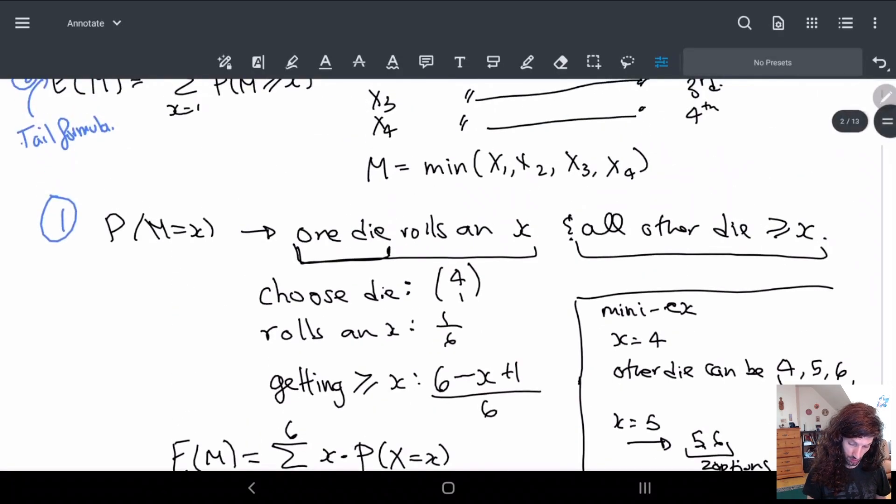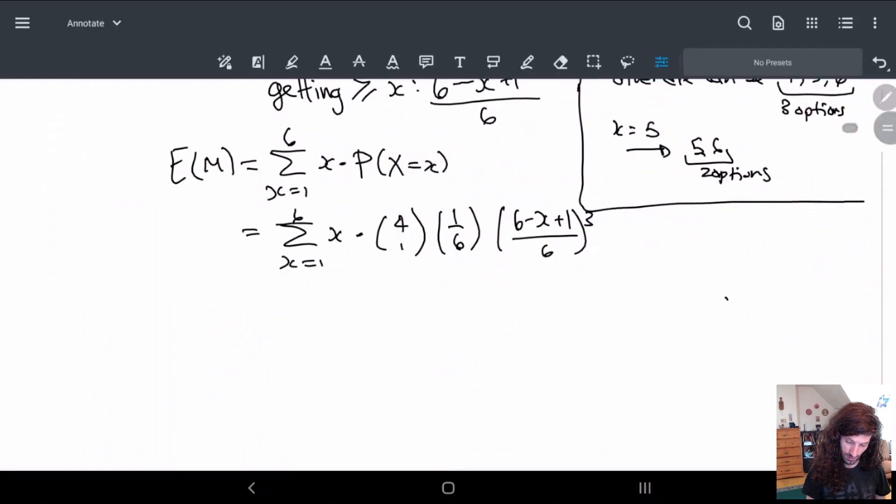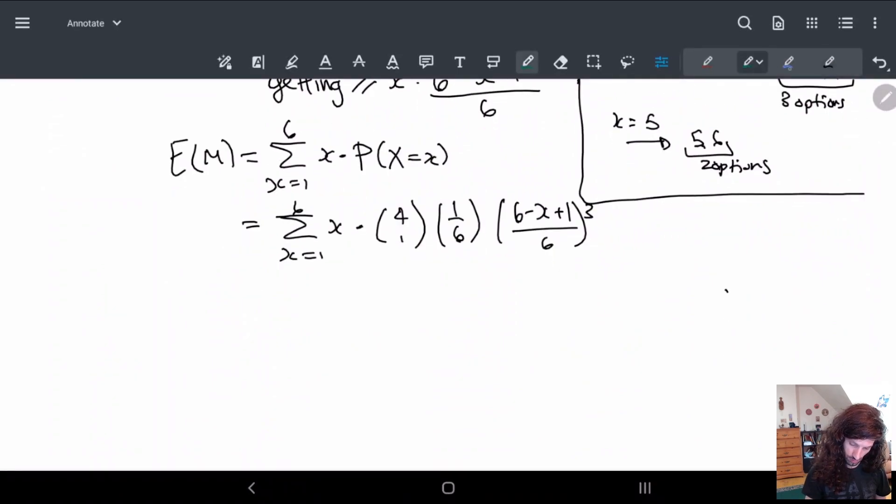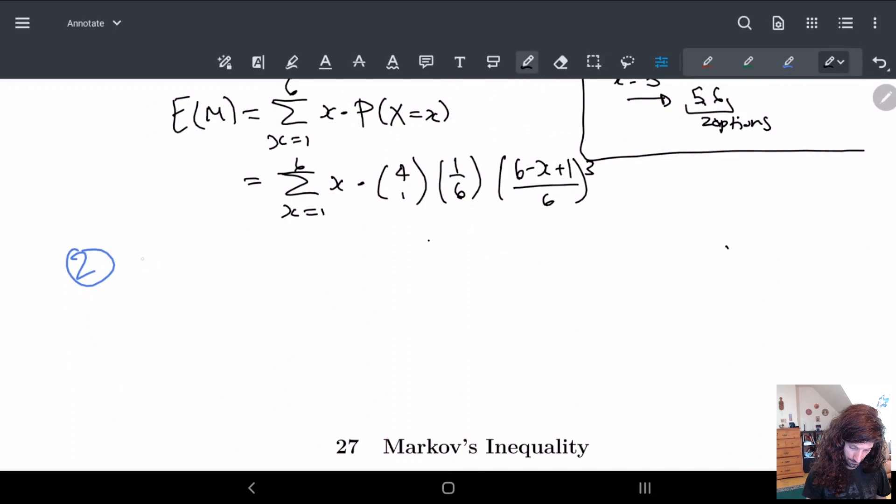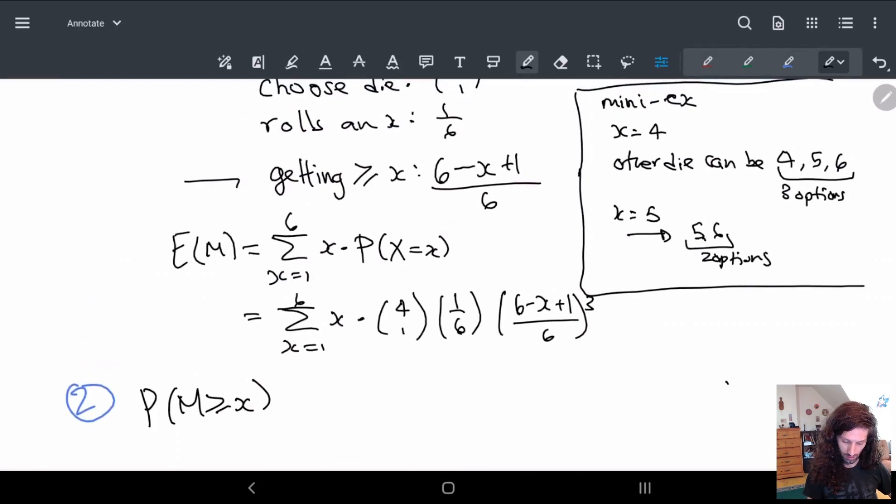Okay, so let's do part two, or let's look at the second way of doing this and see kind of what happens. So number two, and so in this case, we're going to use the tail formula. So what we want to calculate first is probability of M greater than or equal to x. But this, we already have, right? We already did this when we were calculating the previous thing. It's here. So I already know what this is.